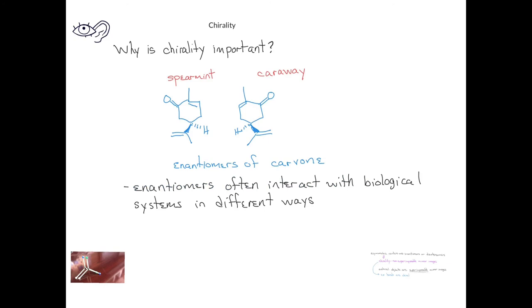Amino acids will have asymmetric centers, and many carbohydrates will also have asymmetric centers. Biological systems will process enantiomers very differently. When we want to understand enantiomers and chirality, we have to realize that molecules are really three-dimensional structures, so it's sometimes difficult to represent a three-dimensional structure on a two-dimensional piece of paper. Because of this, chemists have developed a system of drawing three-dimensional structures on two-dimensional paper.